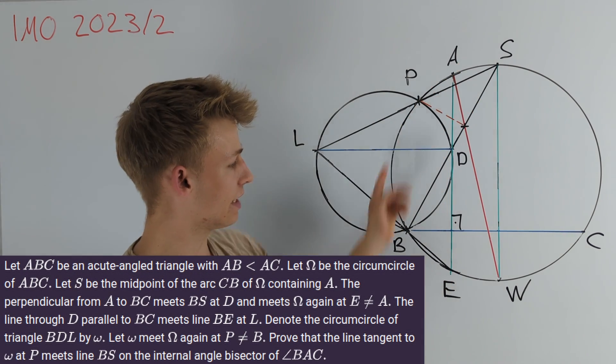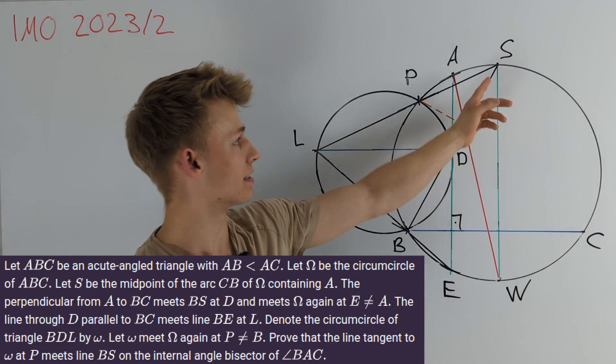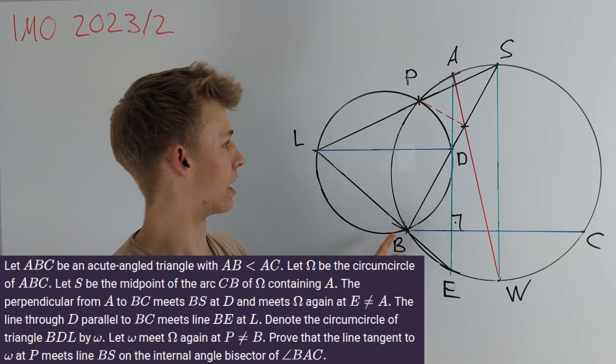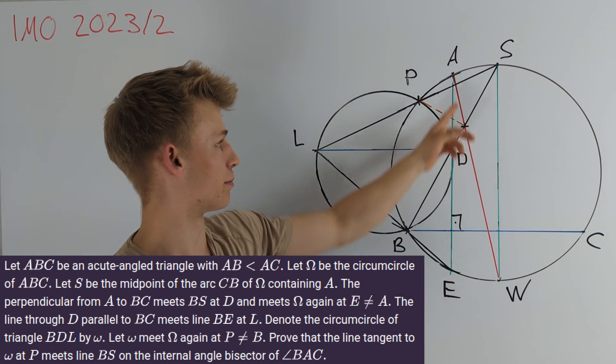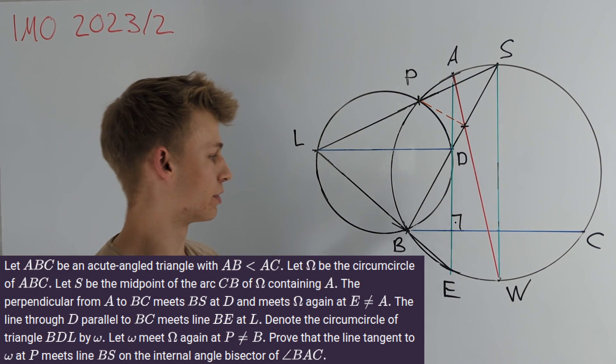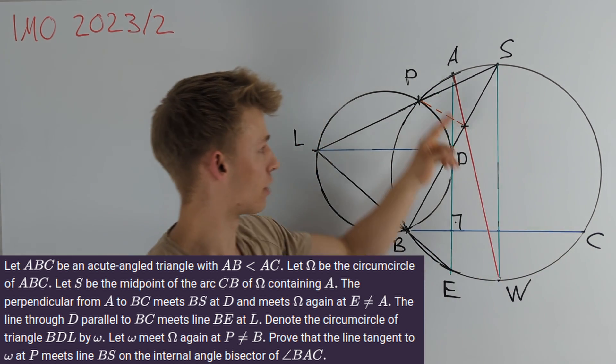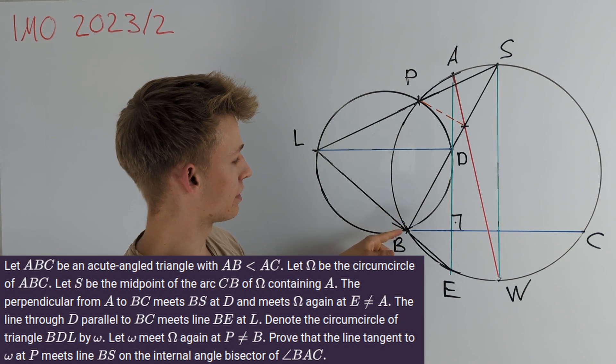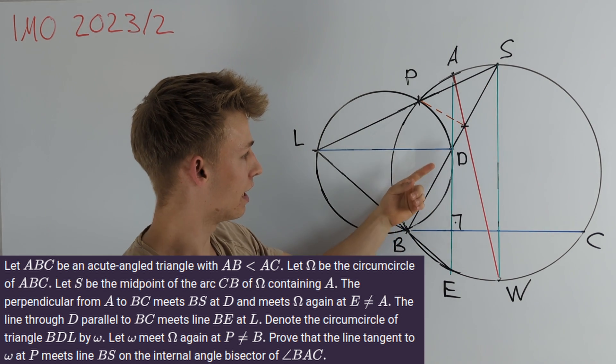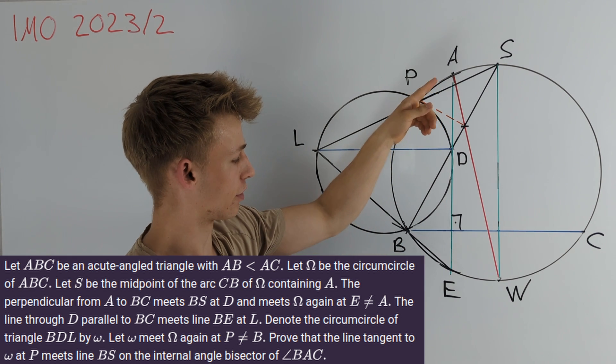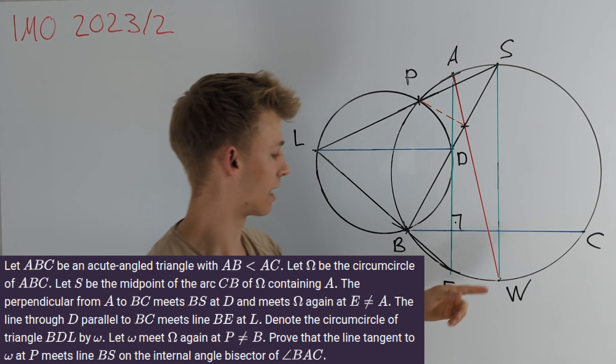We have given a triangle ABC. Point S is chosen as the midpoint of the arc BC that also contains point A. Now we draw in the perpendicular line to BC going through A and intersect it at first with BS at a point D and with the circumcircle of triangle ABC a second time at E.